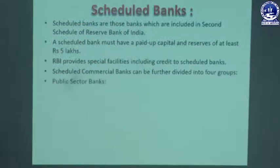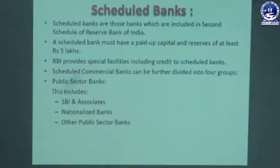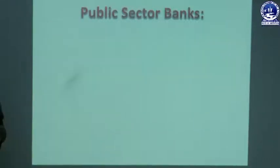Scheduled commercial banks are divided into four groups: public sector banks — which include SBI and its associates, nationalized banks, and other public sector banks — as well as private banks, foreign banks, and regional rural banks. As per the RBI Act 1934 under Section 49, banks listed in the second schedule must have a paid-up capital of at least rupees 5 lakhs and receive various facilities from the RBI including credit facilities.